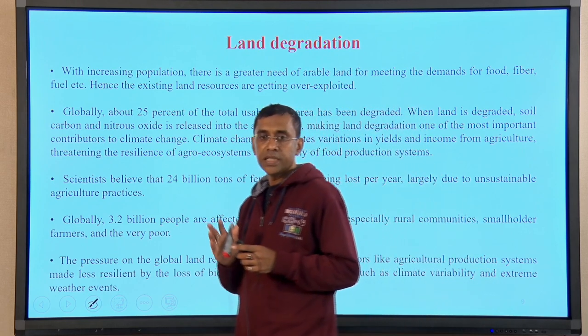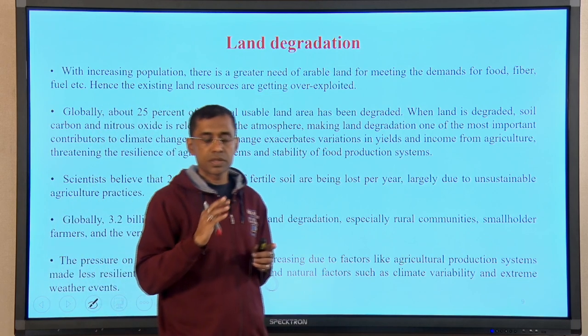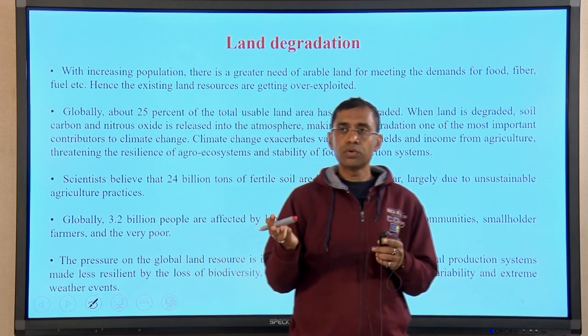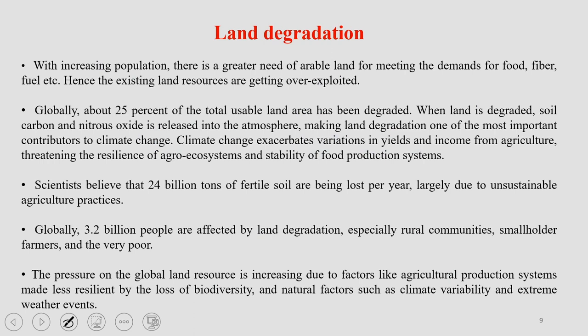Scientists and researchers believe that 24 billion tons of fertile soil are being lost per year, largely because of unsustainable agricultural practices or inefficient natural resource management. Globally, around 3 billion people are affected by land degradation alone — especially rural communities, smallholder farmers, and people who are poor and depend on land for their survival. The pressure on global land resources is increasing with growing population and demand for food, fodder, and fibre, as agriculture is shifting toward heavy use of chemical pesticides and fertilizers.